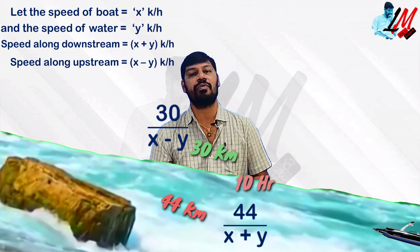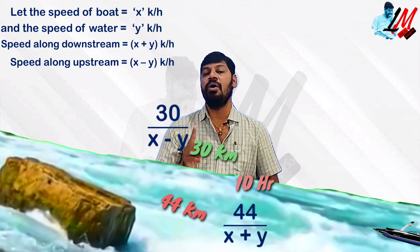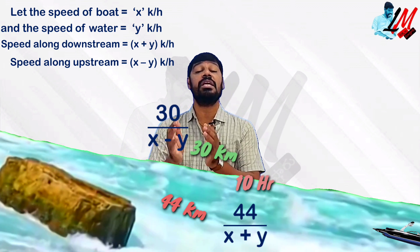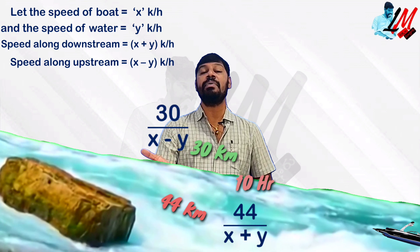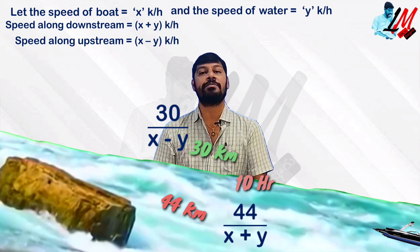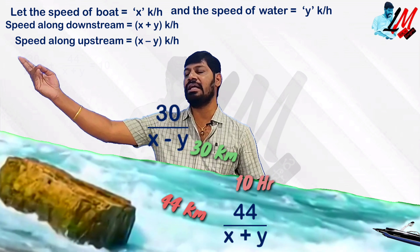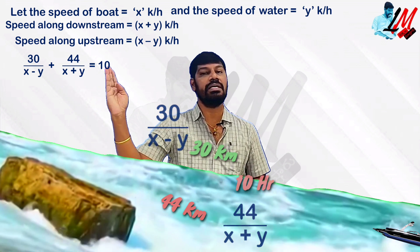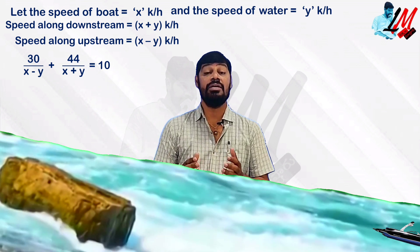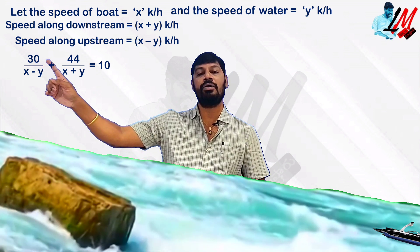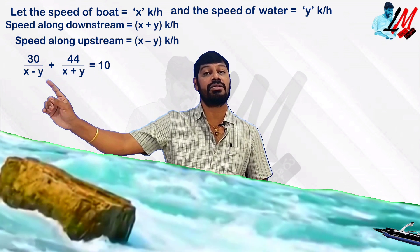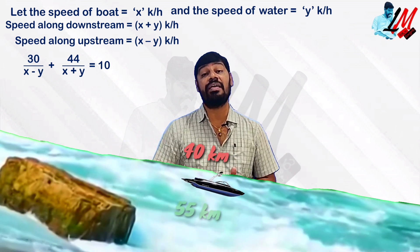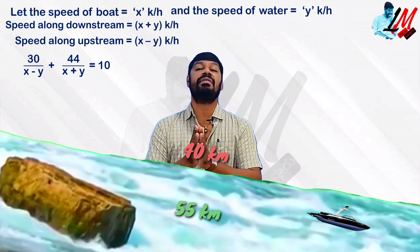So: 30 by (x minus y) plus 44 by (x plus y) equals 10. This is equation 1. For the second condition — 40 km upstream and 55 km downstream in 30 hours — we set up similarly: 40 by (x minus y) plus 55 by (x plus y) equals 30. This is equation 2.